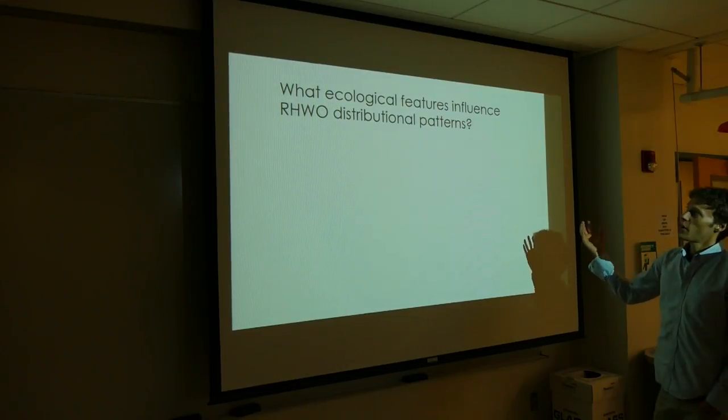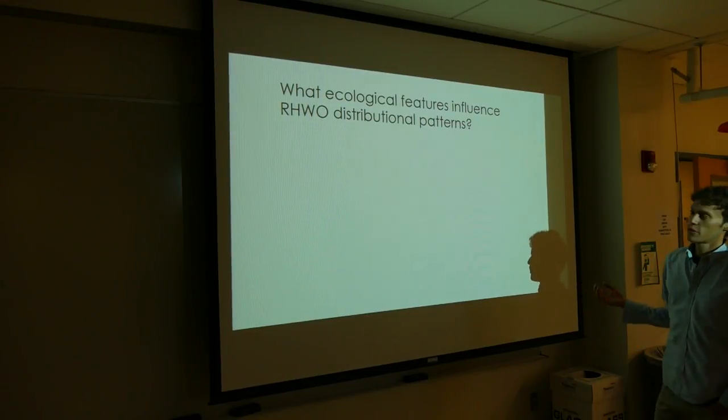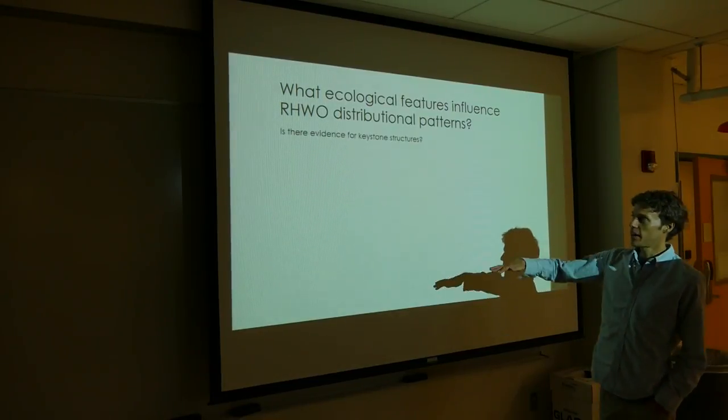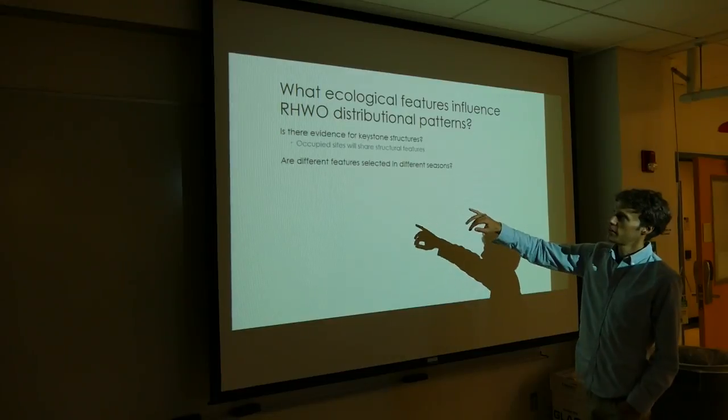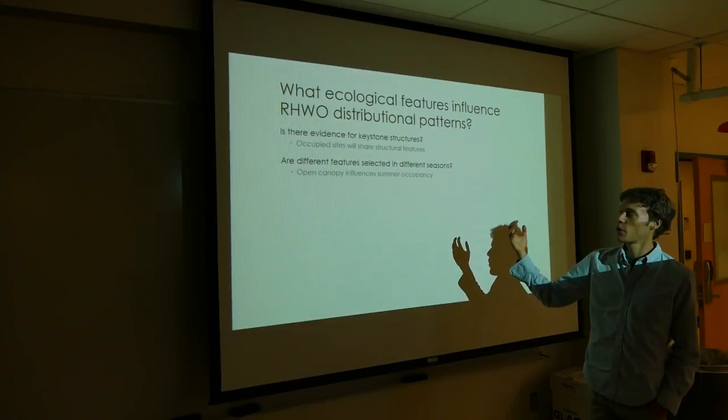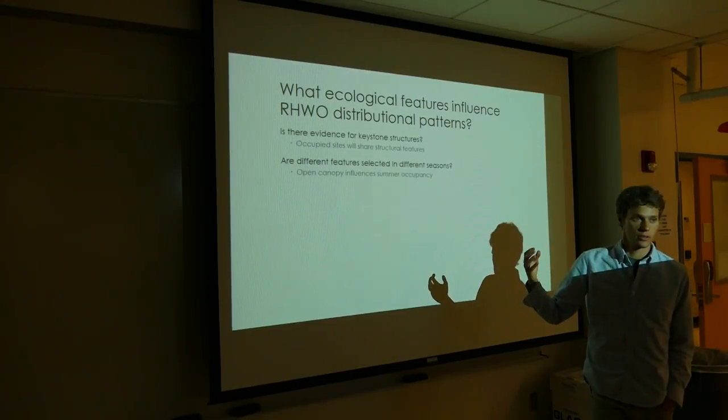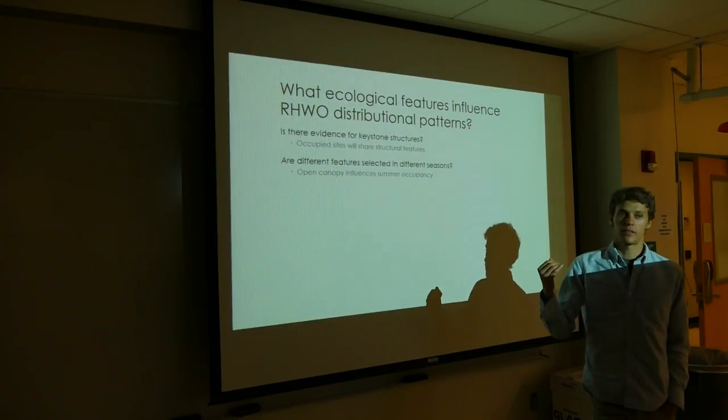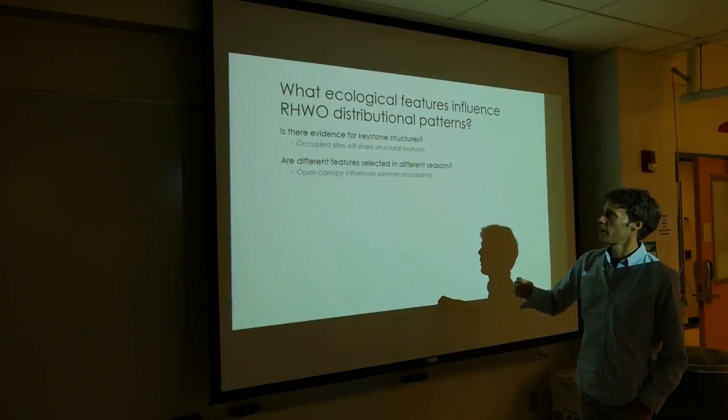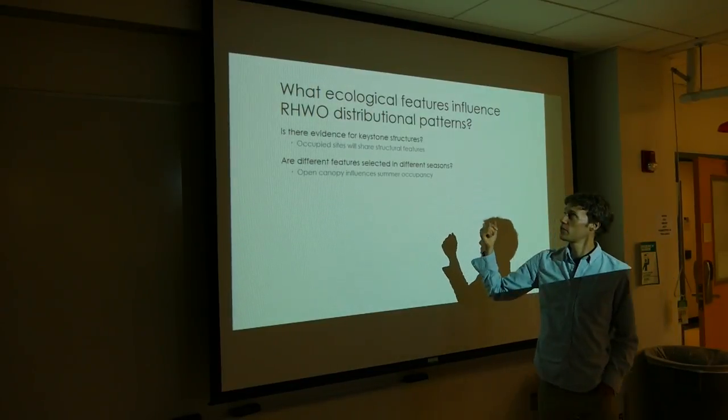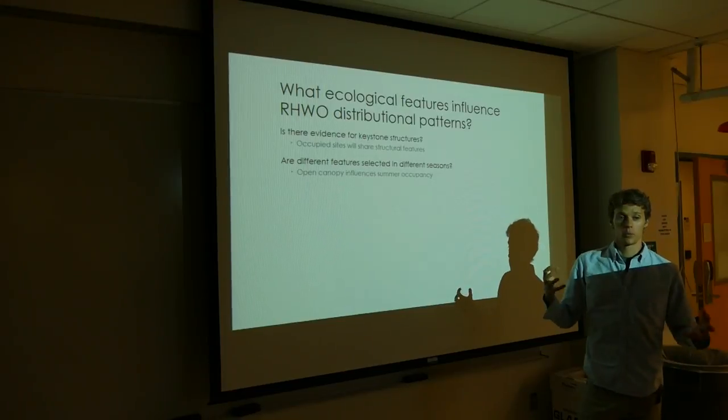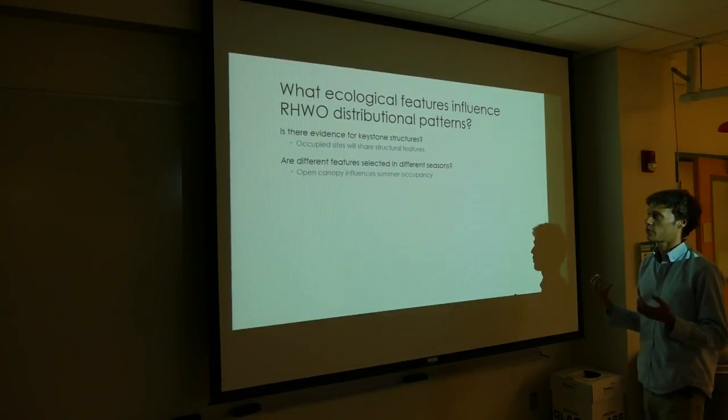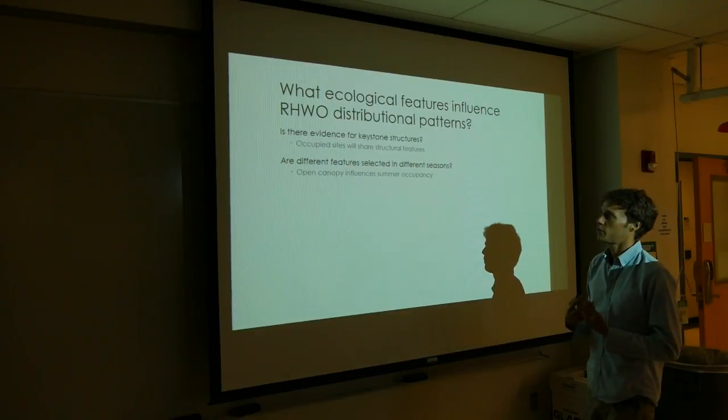My overarching question is, what ecological features influence Red-headed Woodpecker distribution patterns? Splitting this down into other questions, I want to know if there's any evidence for keystone structures in the environment. These are structures that the Red-headed Woodpecker needs to occupy a certain site, and I predict that occupied sites will have features that are in common, which suggests that those features are crucial for the species persistence.